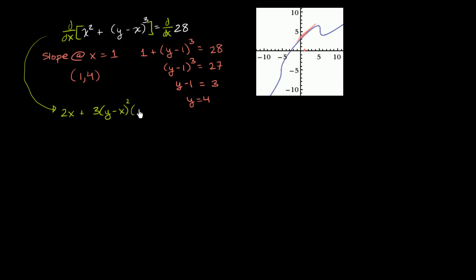Well, the derivative of y with respect to x is just dy/dx. And then the derivative of x with respect to x is just 1. So we have minus 1. And on the right-hand side, we just get 0. Derivative of a constant is just equal to 0.